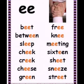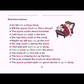Let's look at sentences with double letter EE. He fell into a deep sleep. Will the queen feed her three sheep? The queen's sixth sweet bee swarms. I will meet you next to the tree. She lost three seeds in the creek.